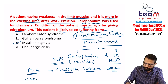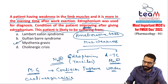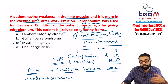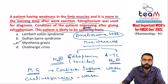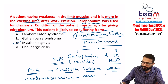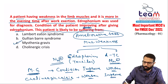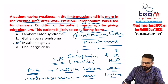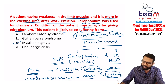In cholinergic crisis, there is excess acetylcholine. Giving edrophonium adds more cholinergic effect, worsening the condition. But tubocurarine blocks acetylcholine effects, improving the condition. So: if edrophonium improves → myasthenia gravis; if tubocurarine improves → cholinergic crisis. In myasthenia gravis, acetylcholine action is decreased; in cholinergic crisis, acetylcholine action is increased.